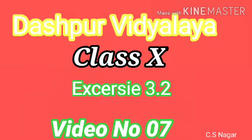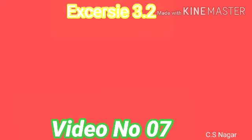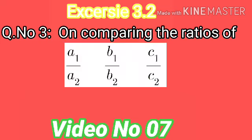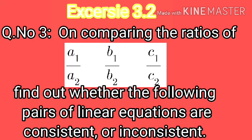Hello everyone, this is my video number 7. In this video, we will continue exercise 3.2 question number 3. This question is the same as question number 2 — comparing the ratios a1 by a2, b1 by b2, and c1 by c2 to find out whether the following pair of linear equations are consistent or inconsistent.